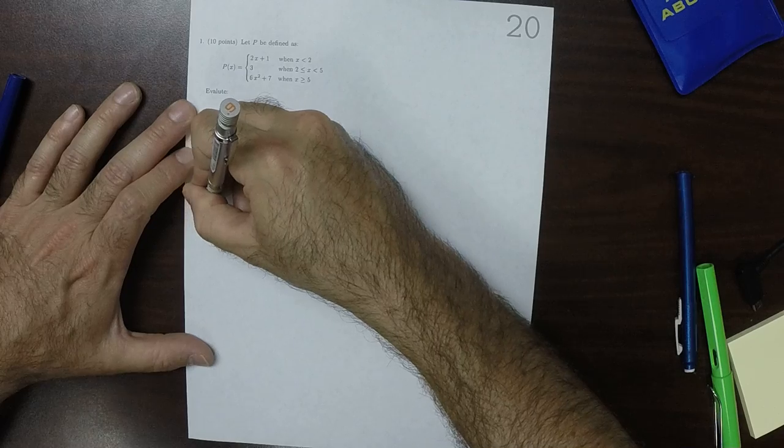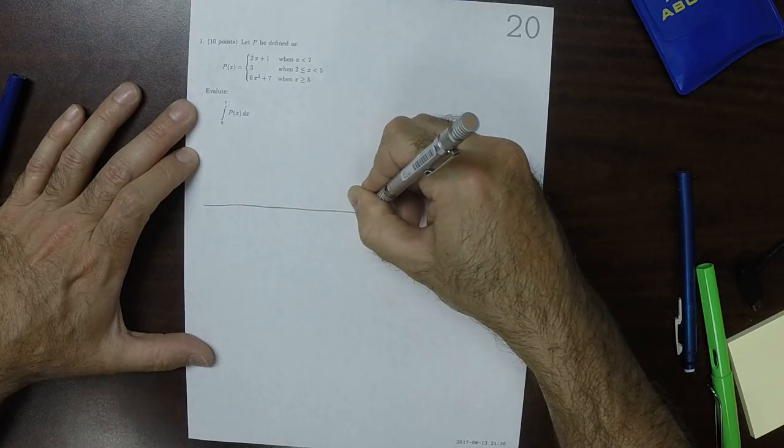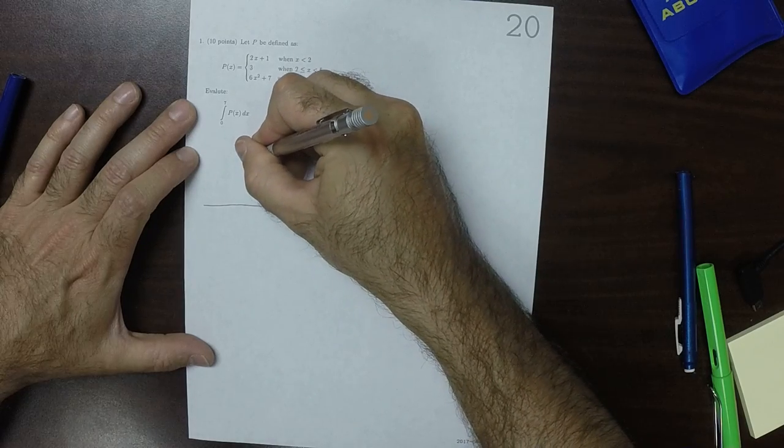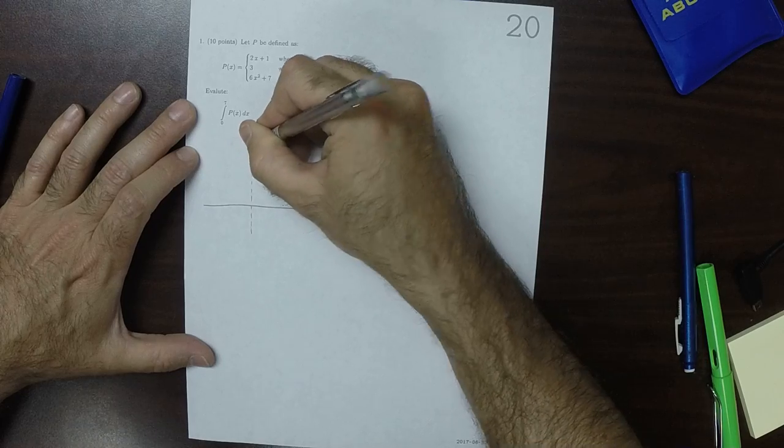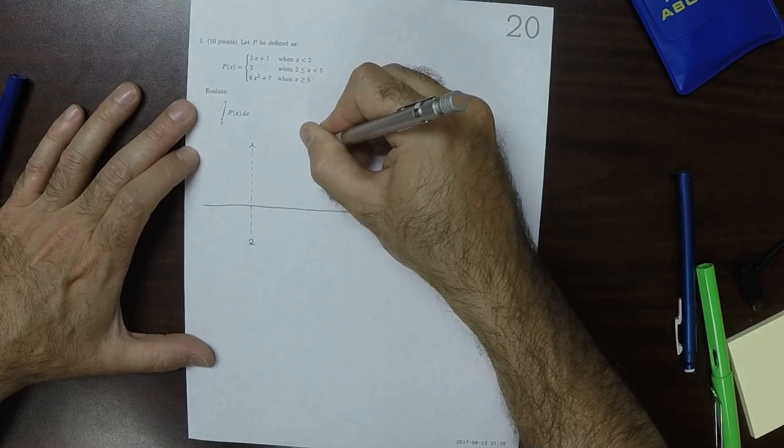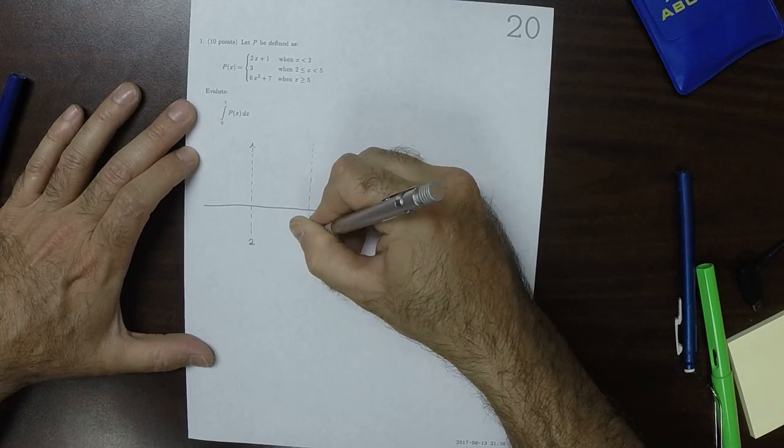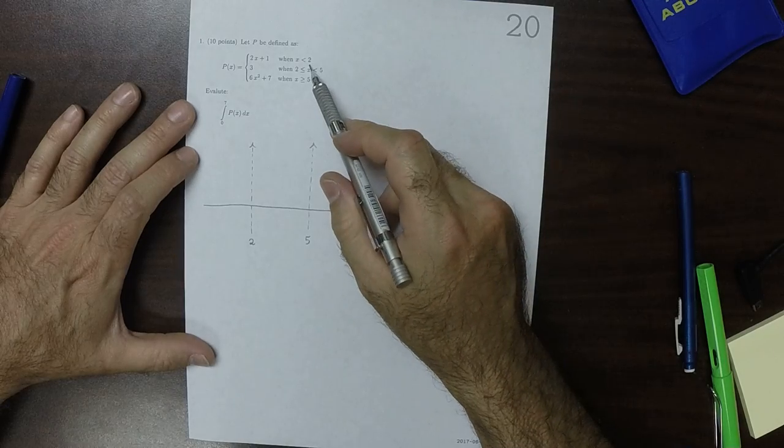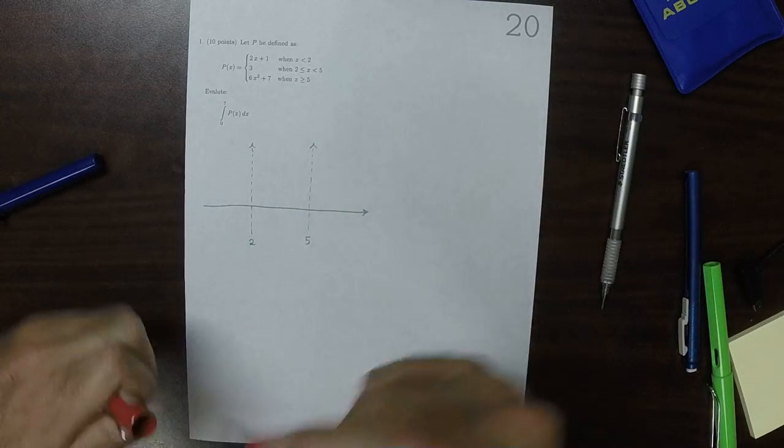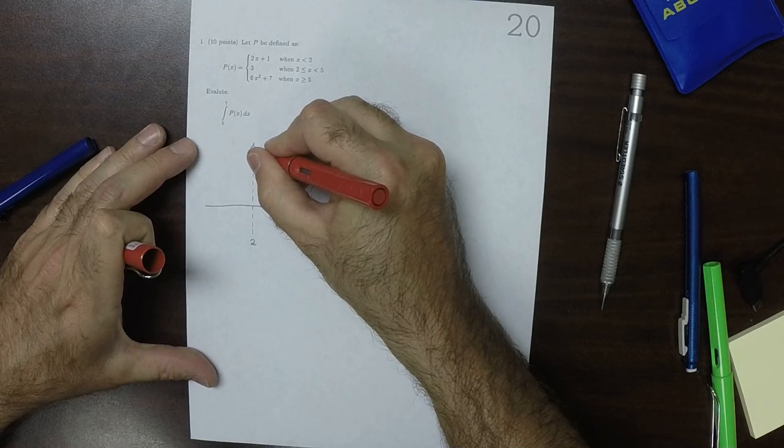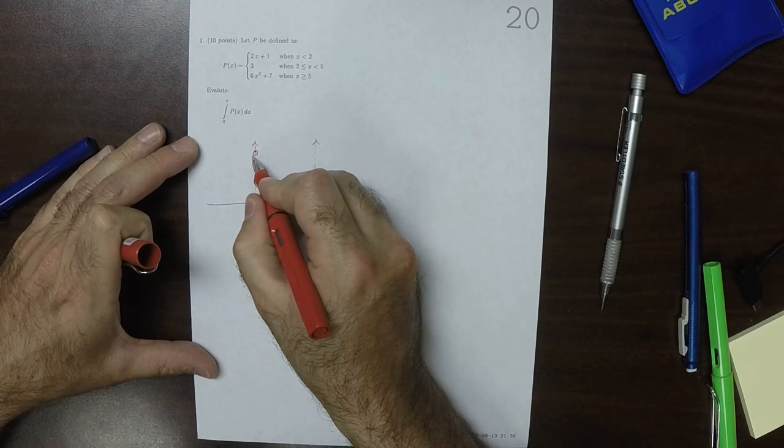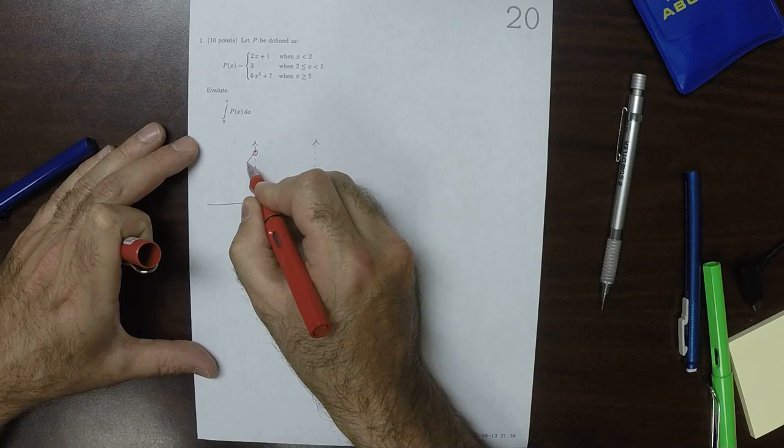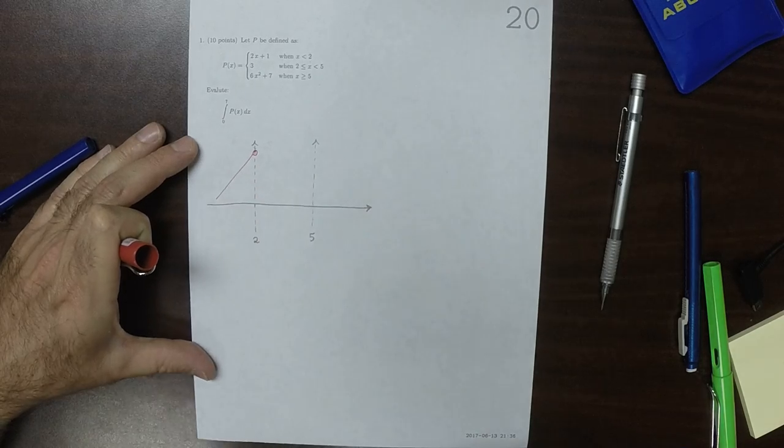It behaves like this. So it changes its mind about how it's going to behave at 2 and also at 5. So at 2, it would be at height 5. So it would be like this. So that's open. And then it's a line of slope 2. And at 0, it gets to 1. So it's kind of like that.